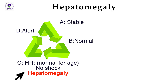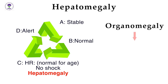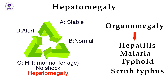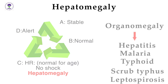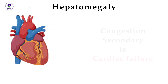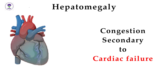Hepatomegaly in children is commonly attributed to intrinsic liver diseases such as organomegaly secondary to hepatitis, malaria, typhoid, scrub typhus, leptospirosis, etc. Another common cause of hepatomegaly is congestion secondary to cardiac failure or cardiovascular dysfunction.